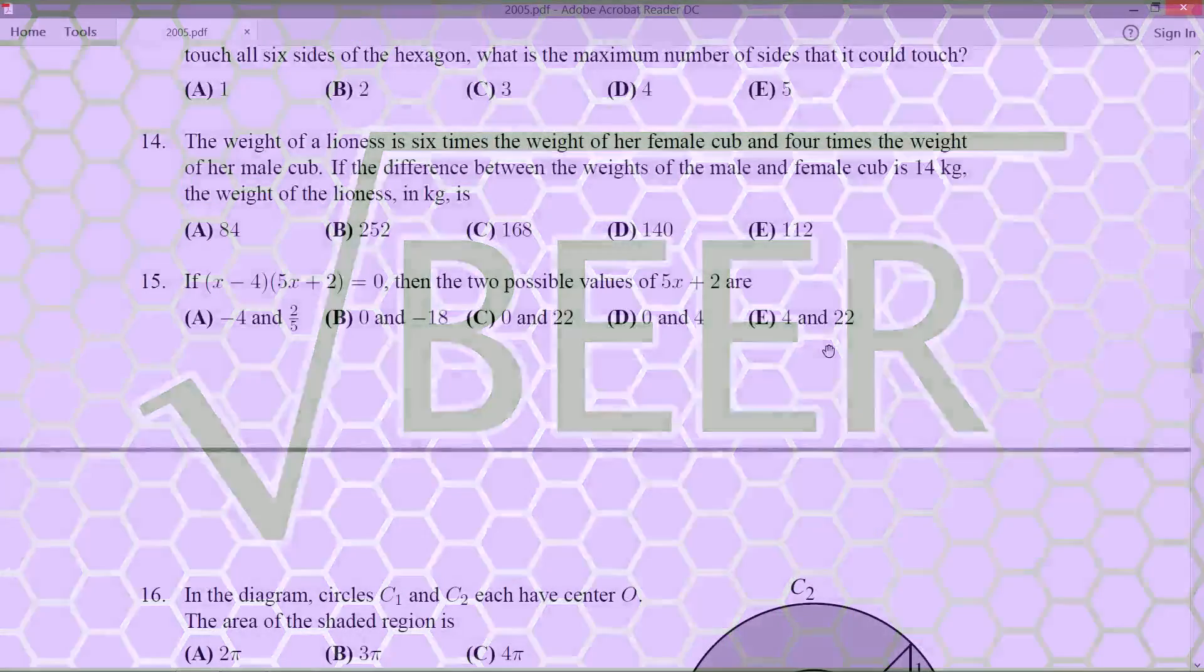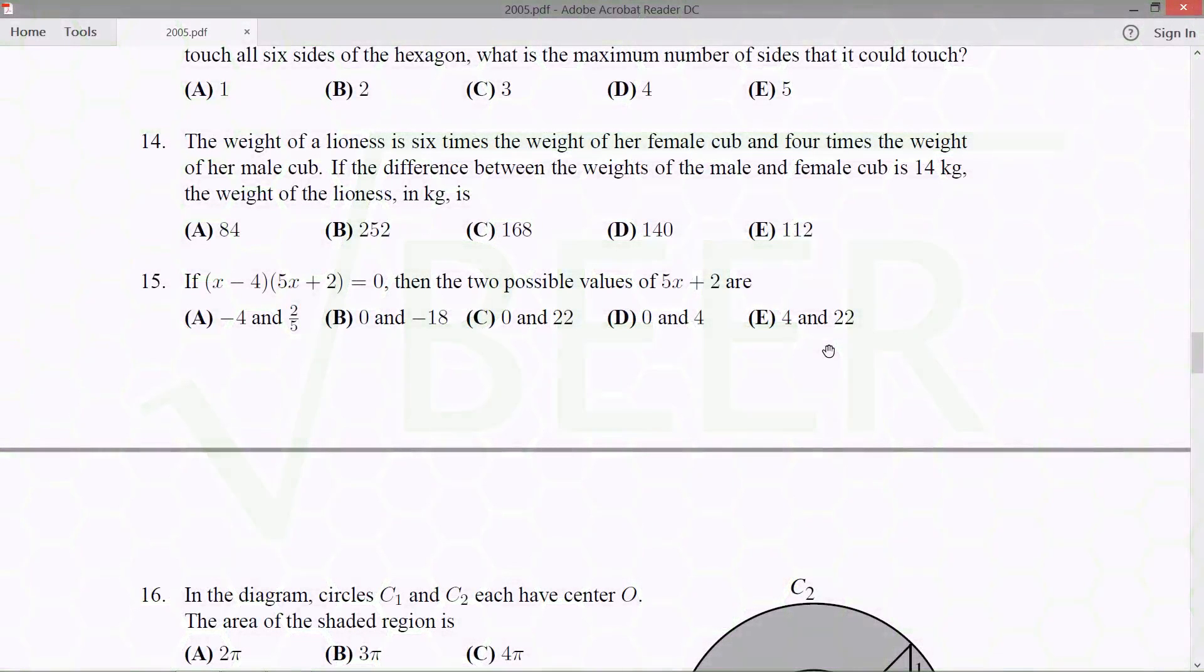Hello, hello, hello, my fellow mathletes. We're looking at question 15 on the grade 11 multiple choice Fermat paper. If (x-4)(5x+2) = 0, then the two possible values of 5x+2 are.